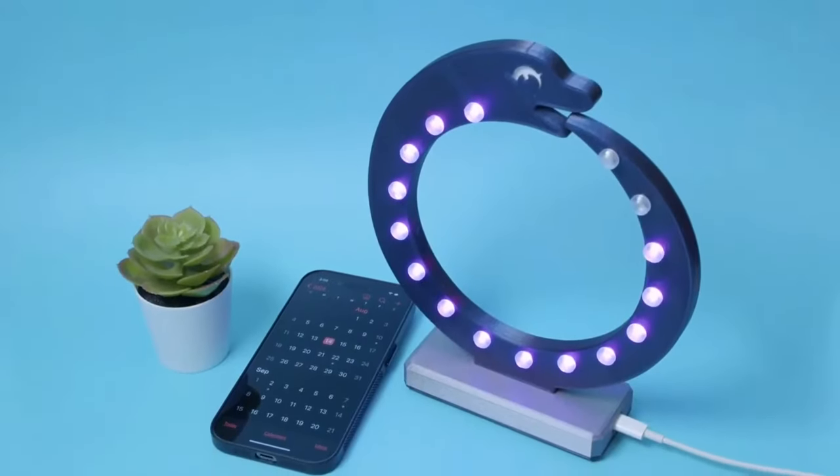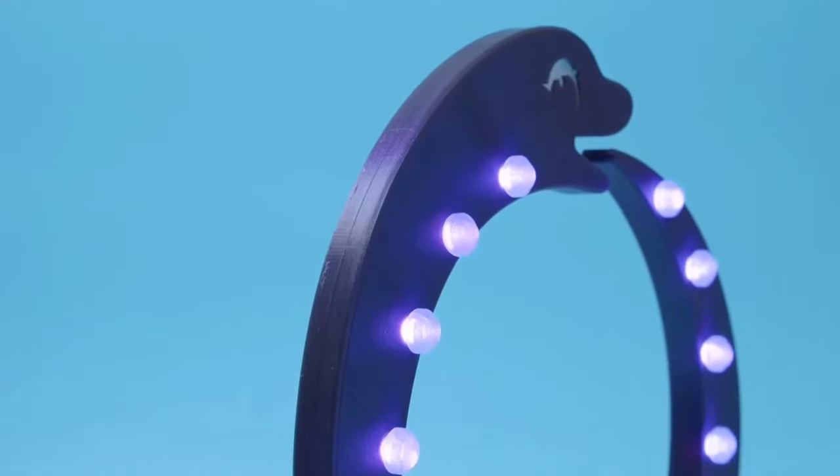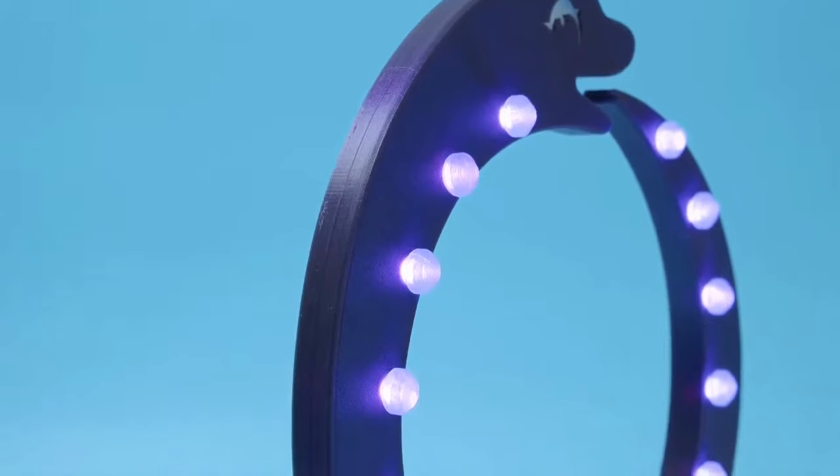Our 3D printed sign is in the shape of Blinka, our official CircuitPython mascot. Each LED is fitted behind a 3D printed bulb to create 16 lights representing the days in August.